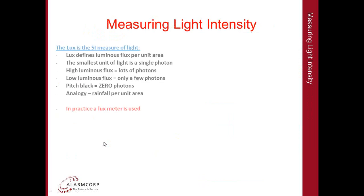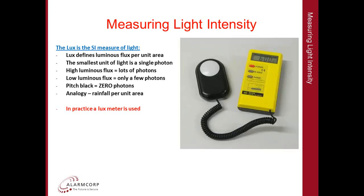Measuring light intensity. Lux is the standard measure of light — it defines luminous flux per unit area. The single smallest unit of light is a single photon. High luminous flux means there are lots of photons; low luminous flux means there are only a few. Pitch black like inside a cave means there are no photons. The best analogy is rainfall per unit area. In practice we use a lux meter. The reason we talk about photons per unit area will become apparent in the coming slides.